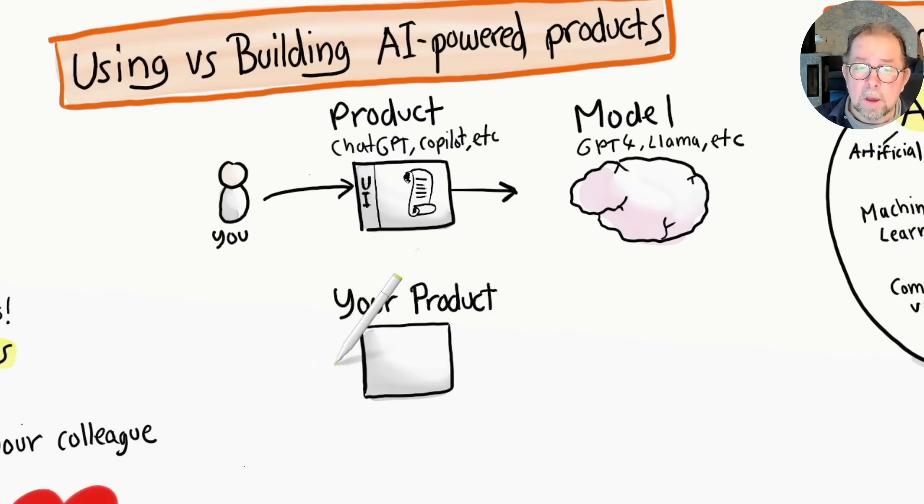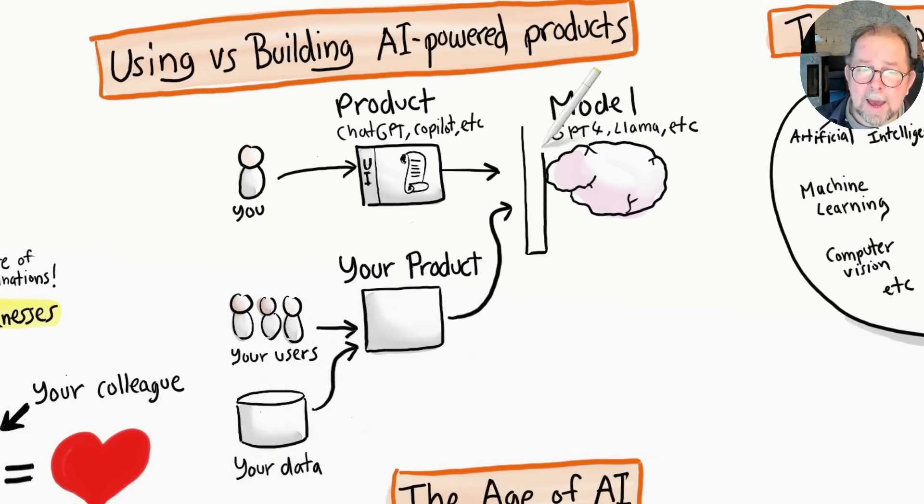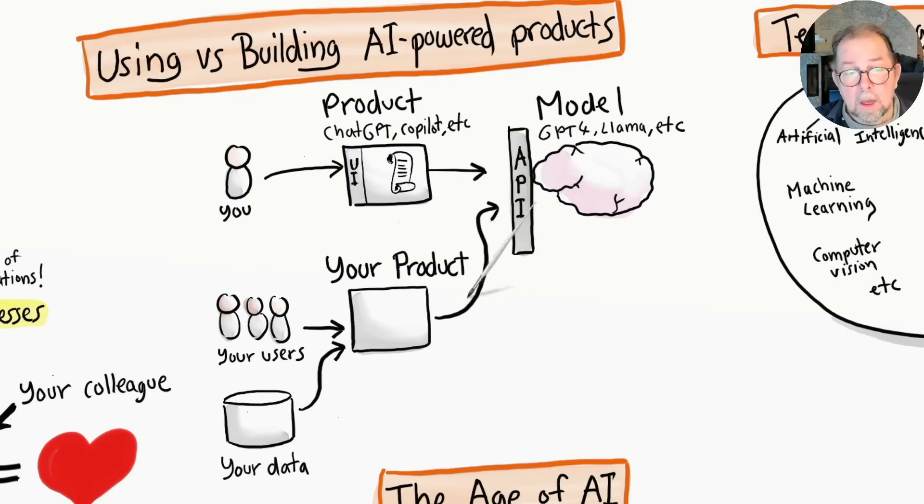For example, let's say you have an e-learning site. You could add a chatbot to answer questions about the courses. Or as a recruitment company, you might build AI-powered tools to help evaluate candidates. In both these cases, your users interact with your product, and then your product interacts with the model. This is done via APIs, or application programming interfaces, which allow your code to talk to the model.